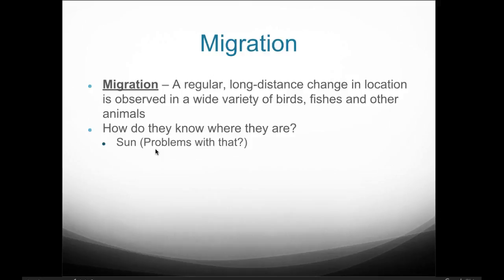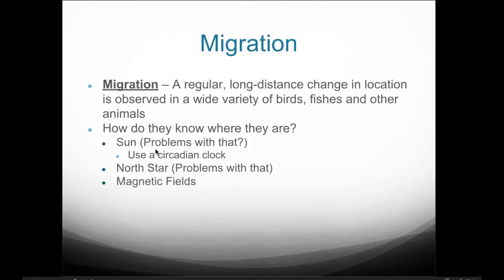How do they know where they are? Is it the sun? There are problems with that because the sun changes position throughout the day and it could be cloudy. Some animals use circadian clocks. They also possibly use the north star, but Polaris is not always available. Some animals pick up magnetic fields. This is relevant when we look at windmills for renewable energy — they may be disrupting the migratory patterns of some bird species, either by disrupting magnetic fields or harming them in other ways.